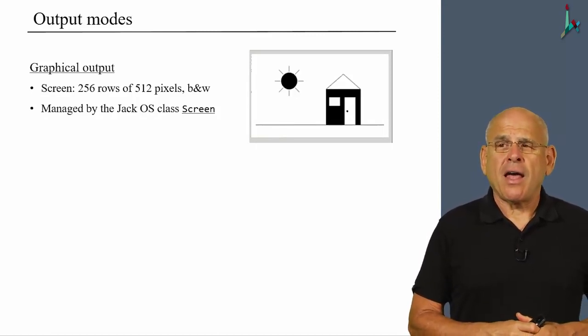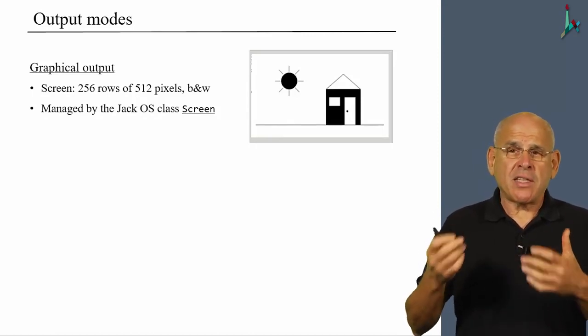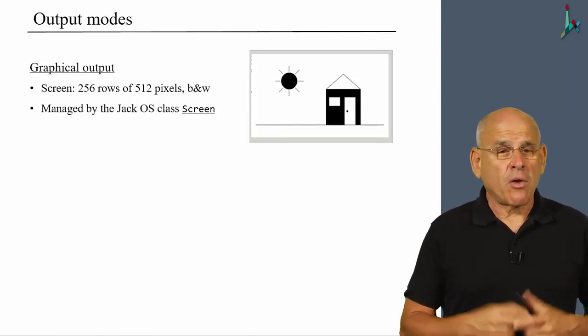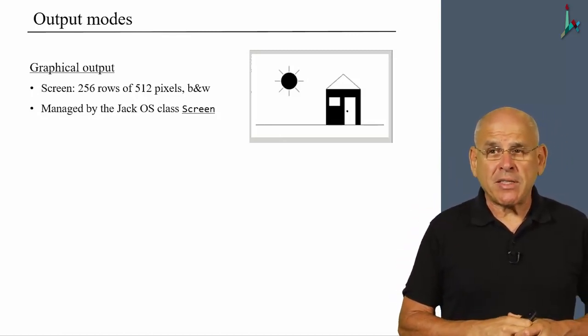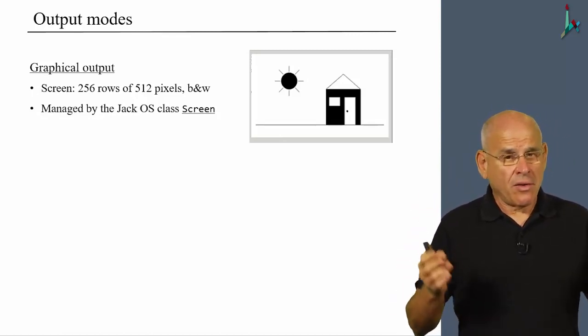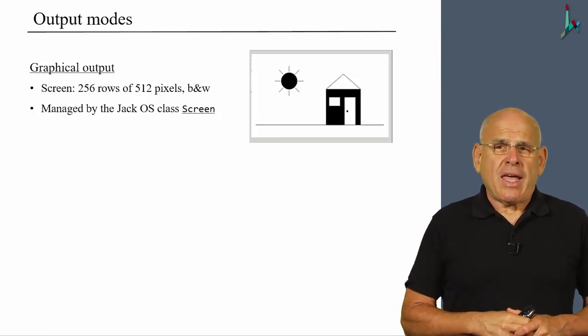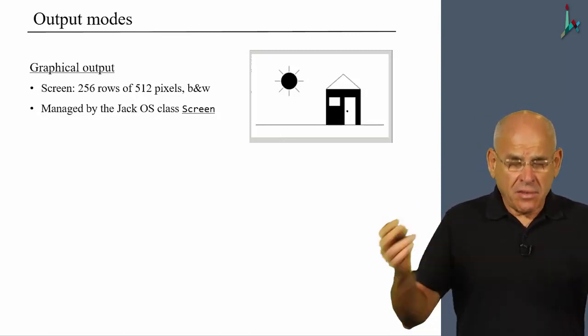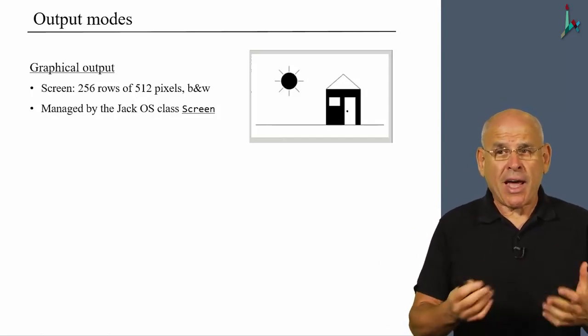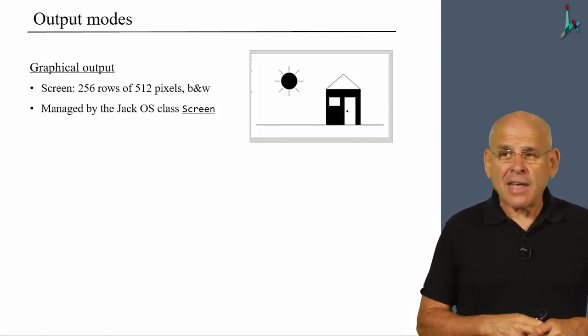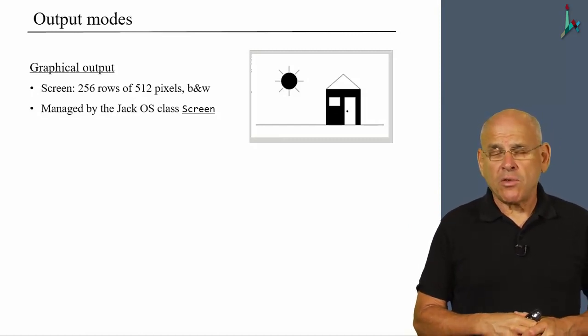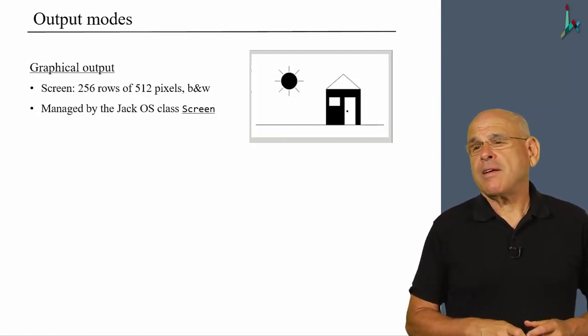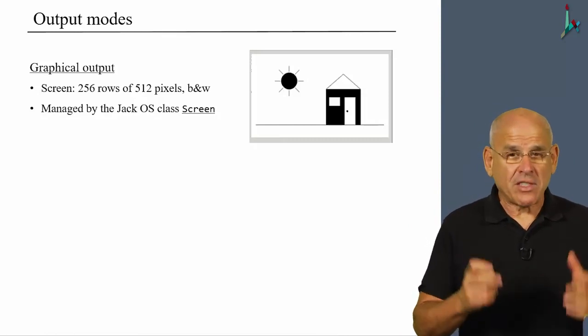your program can think about the screen in graphics mode. The program thinks that the screen consists of a grid of 256 rows by 512 pixels each, black and white on the Hack platform. Using the various abstractions supplied by the screen class, we can draw all sorts of nice pictures and do graphics-oriented outputs.